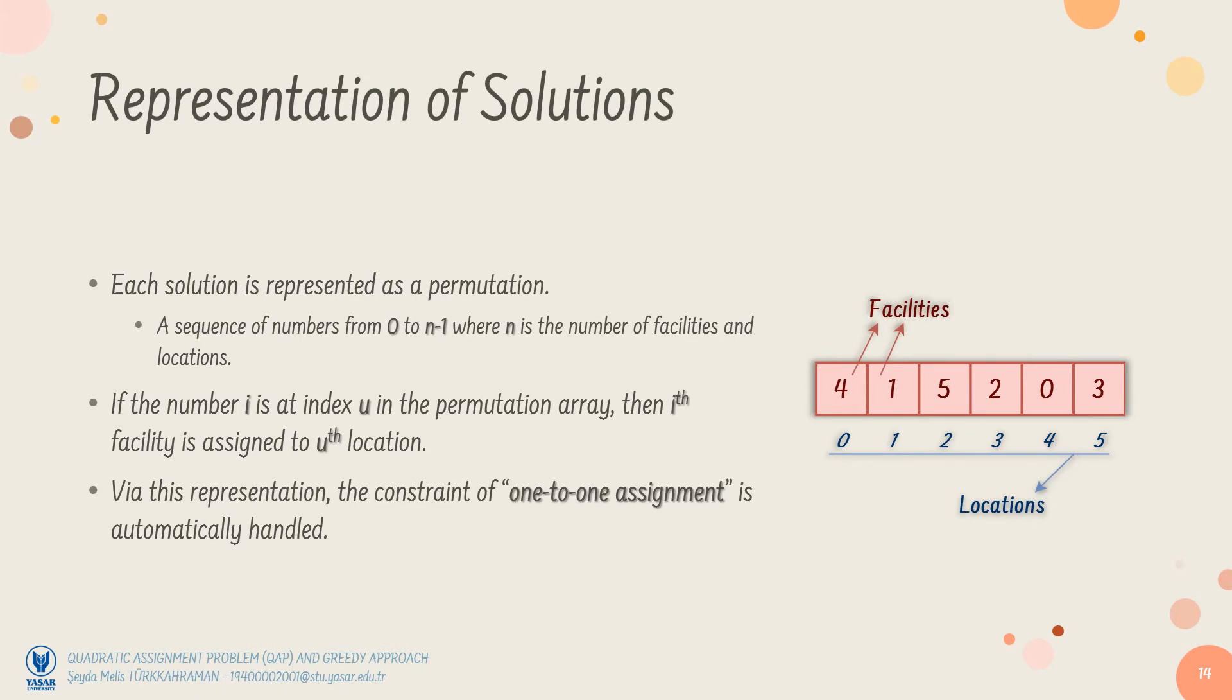As I said in the formulation, the permutation is very convenient to represent the solutions of QAP. Here, the permutations are nothing but a non-repeating sequence of integers from 0 to N-1, where N is the number of facilities and locations. In the figure, you can see a sample solution with N equals to 6. The idea is that if the number I is at index U in the permutation, then the facility I is assigned to location U. In the sample permutation, the facility I is assigned to location 0, the facility I is assigned to location 1, and so on. Via this representation, the constraint of 1 to 1 assignment is automatically handled.